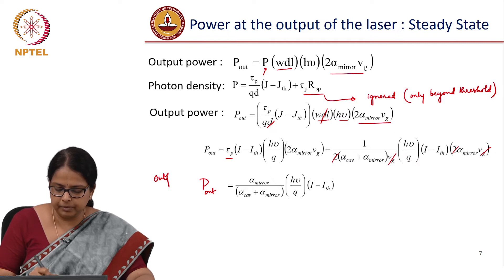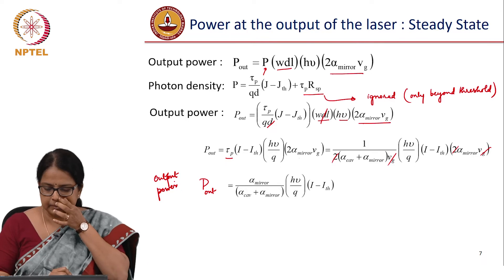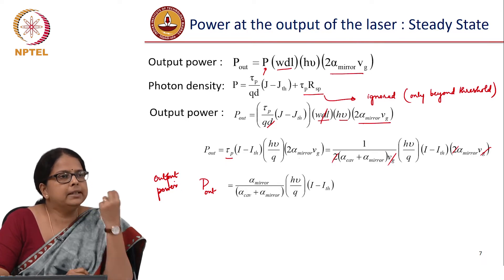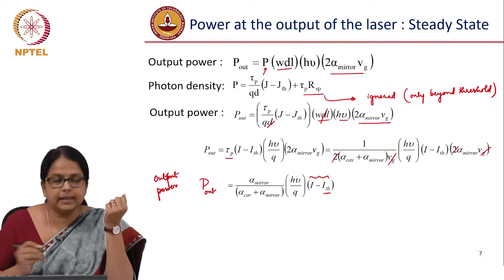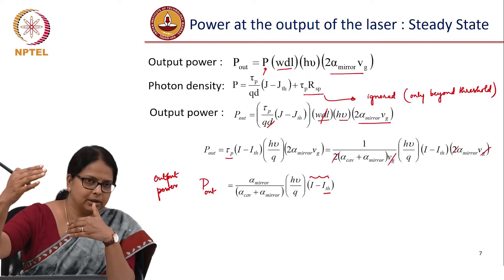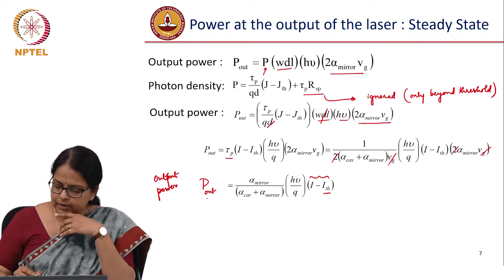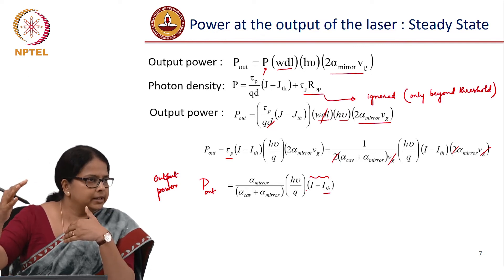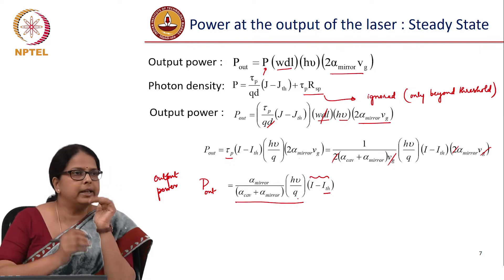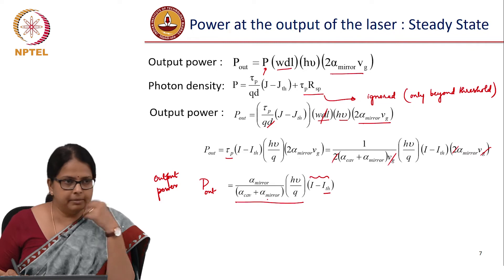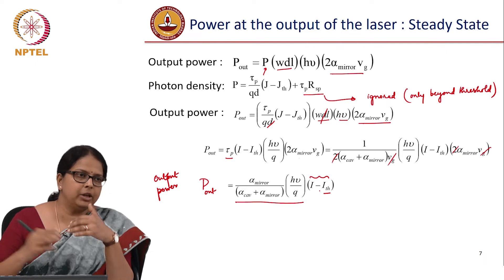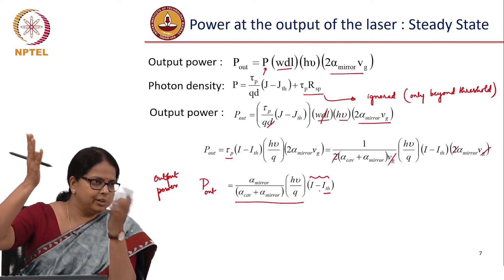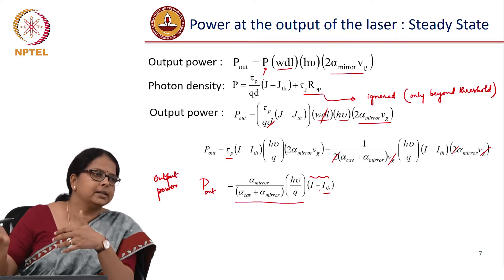So you get one nice sleek expression for power output. So this is output power, which means that the power that is available at the output of the cavity depends on this I minus I_th, which means how much current am I able to inject above threshold. And if you see this relation is linear with I minus I_th, because all these things are constants once you make the laser cavity. Once you have the mirror reflectivities, once you have the cavity decided, hν by Q is obviously a constant. So it is directly proportional, which means that beyond threshold what we drew as a straight line—I did not justify why it was a straight line—now I am telling you this is a straight line because it is a linear relation.